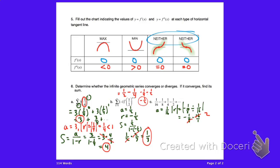The absolute value of the common ratio is the absolute value of two, which equals two — that's greater than one. The first two series converged, but this one diverges. Therefore this infinite geometric series diverges and has no sum — it just keeps getting bigger.